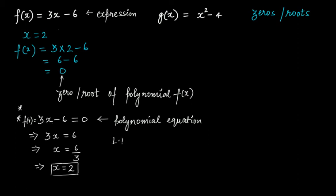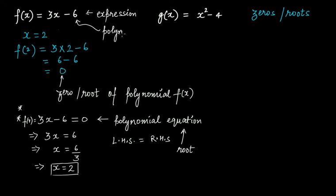When the left-hand side, that is 3x minus 6, becomes equal to the right-hand side, that is 0, for x equal to 2, that's why x equal to 2 is the root of this polynomial equation fx equal to 0. So x equal to 2 is a zero of this polynomial, but x equal to 2 is the root of this polynomial equation.